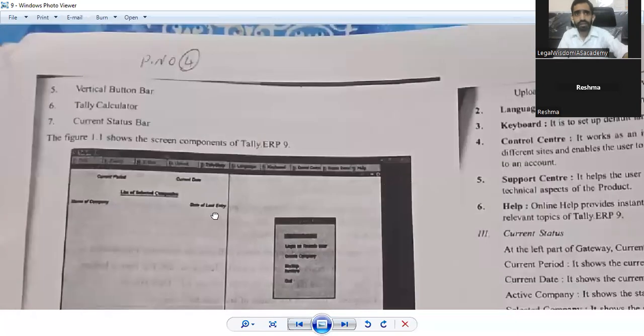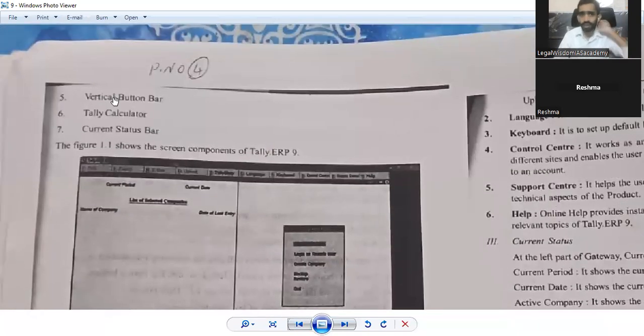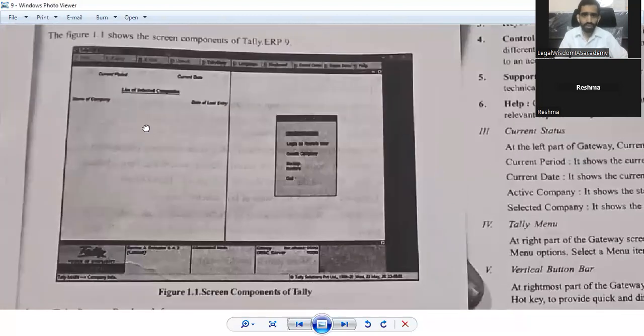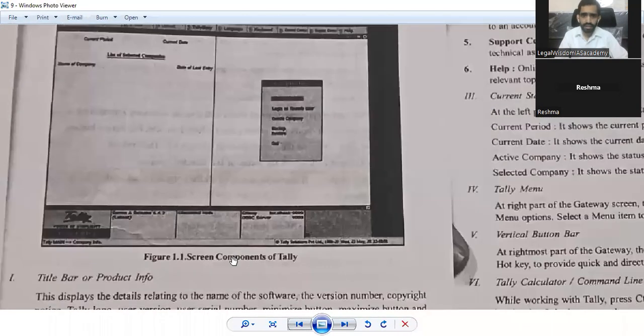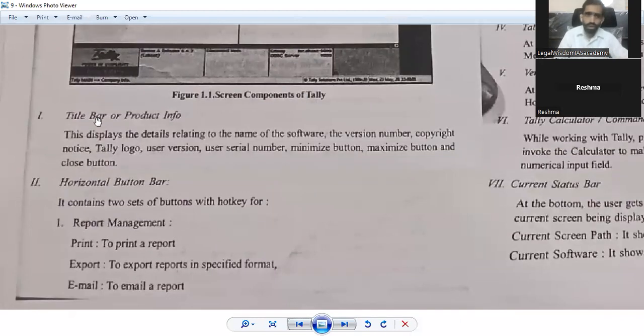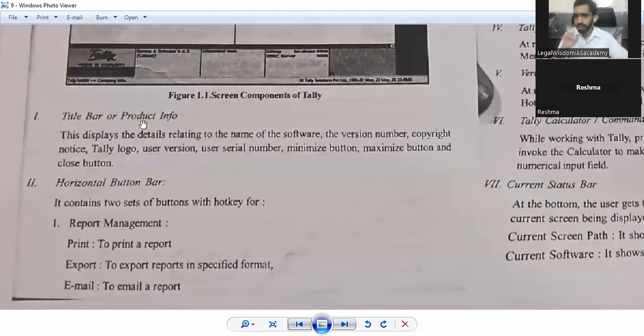The fifth one is vertical button bar. Sixth one, Tally calculator, and the seventh one is the current status bar. You can see from this pic which we have loaded here directly from the notes. These are the screen components of Tally. First one, let us discuss in detail.